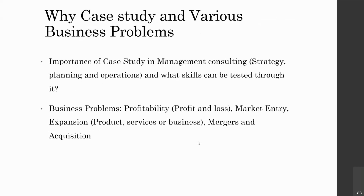We solve case studies because any typical organization's management is divided into three parts: strategy, planning, and operations. Strategy is long-term — a 10 or 20 year roadmap. Planning is relatively short-term, one to five years. Operations can be daily, monthly, or even hourly if the company does micromanagement. Problems are faced in all three functions.